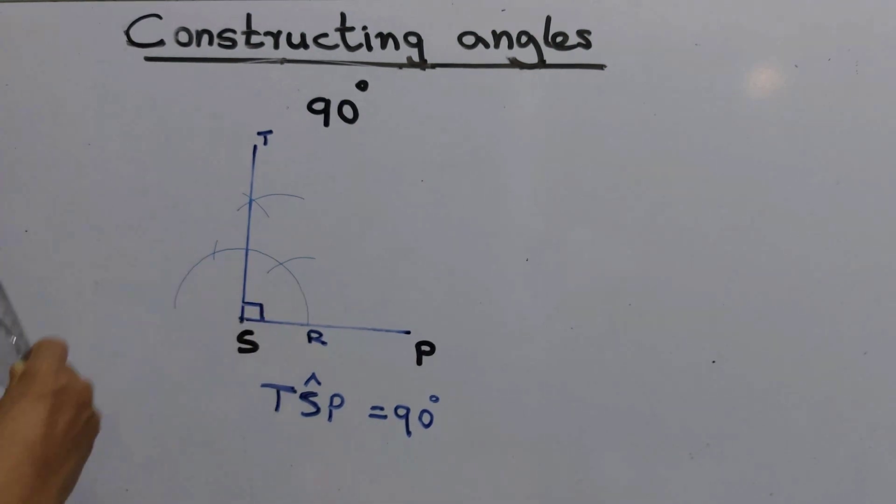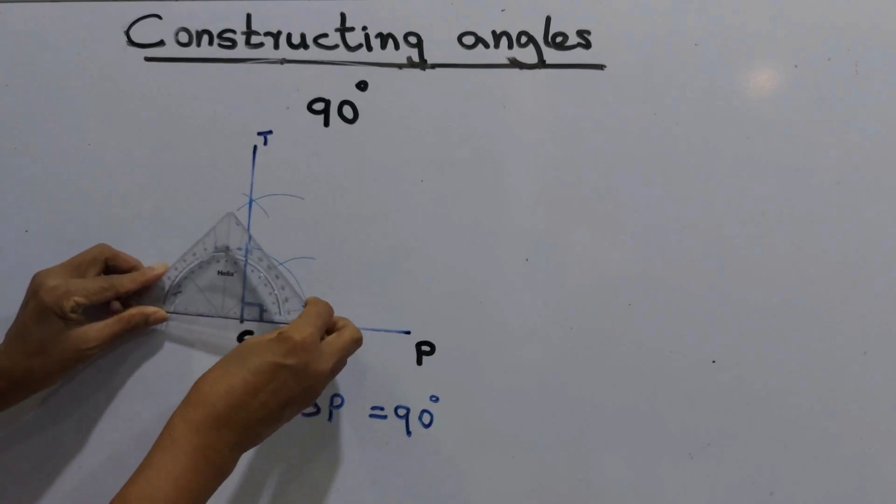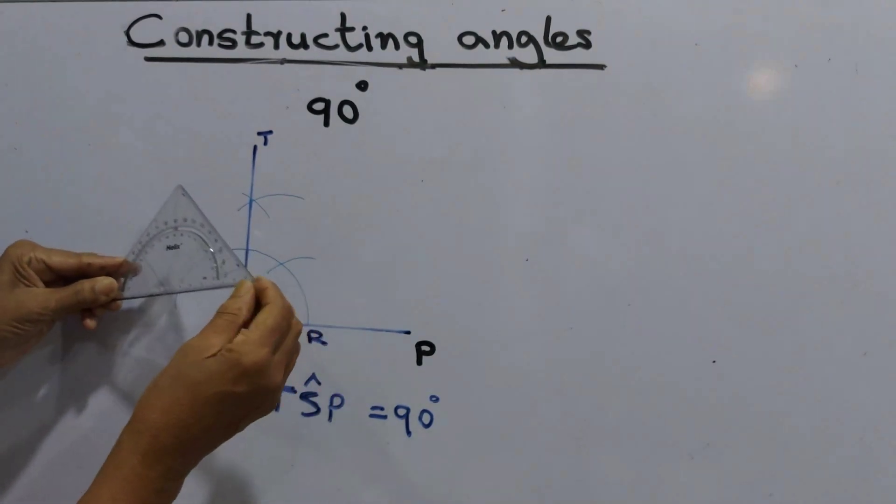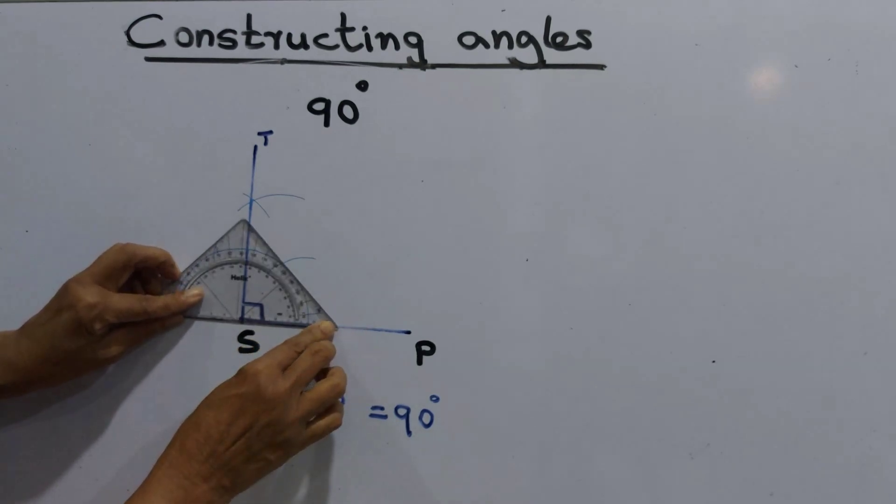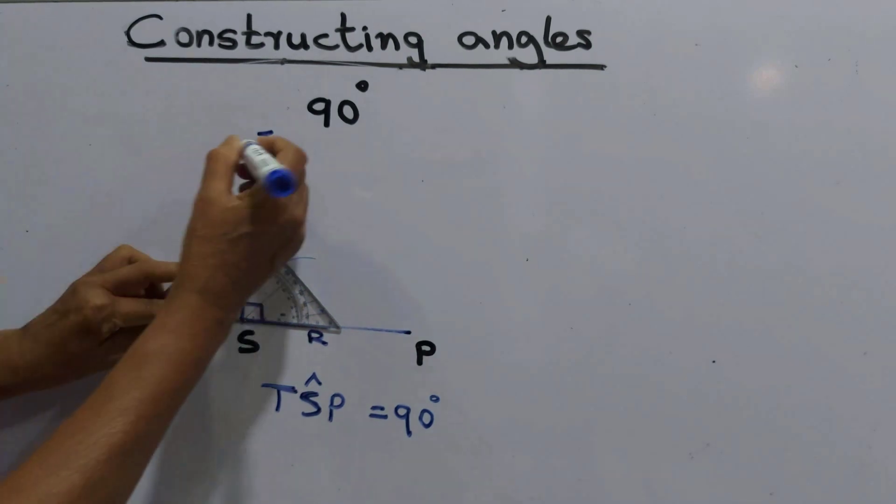We can take the protractor to measure the angle. Keep the zero line of the protractor on the SP line. It shows that it is 90 degrees.